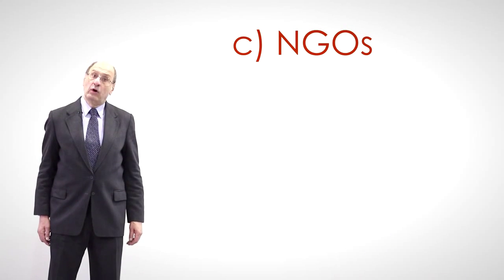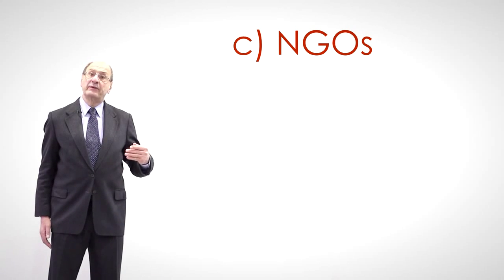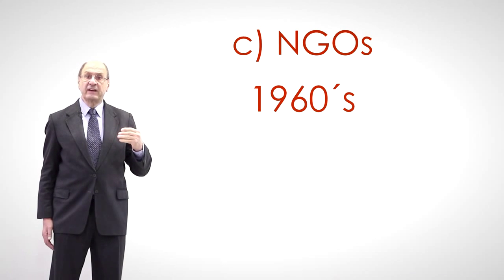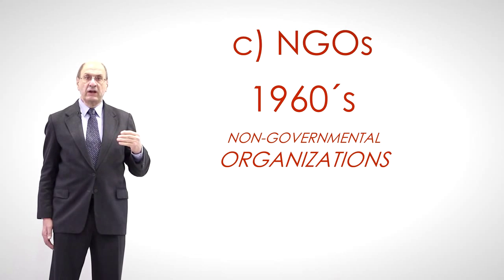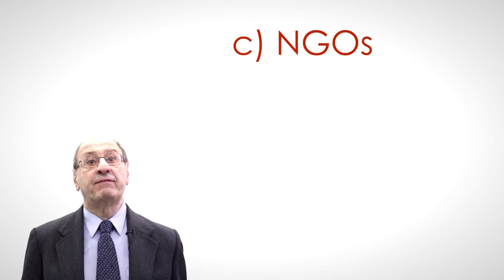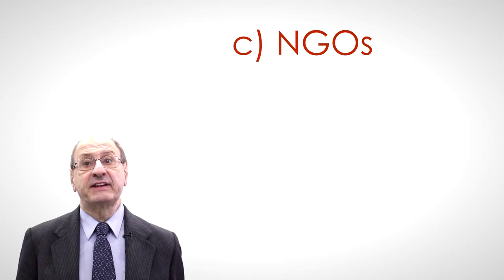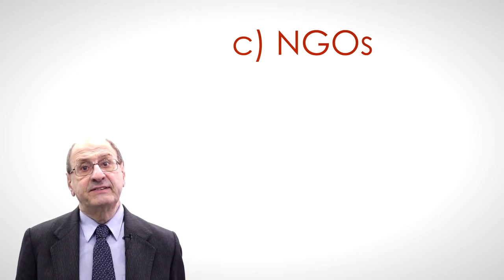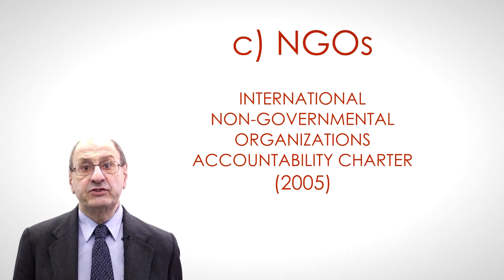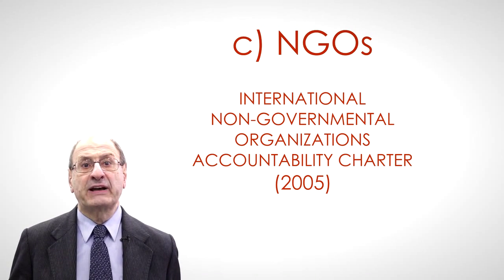As we have seen before, the momentum of the State-led human rights movement after World War II cooled down in the 1950s. A decade later, starting in the 1960s, non-governmental organizations or NGOs spurred international human rights to acquire political legitimacy and legal status worldwide. In 2005, several NGOs such as Amnesty International, Greenpeace, and Oxfam signed the International Non-Governmental Organizations' Accountability Charter, which is not a legally binding document. This charter sets forth professional criteria for NGOs to become more accountable.